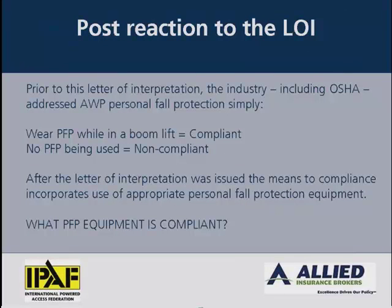As a byproduct of that letter of interpretation, prior to its issuance the industry addressed aerial work platform personal fall protection simply by saying: wear personal fall protection while in a boom lift and you're compliant. After this letter was issued, the means to compliance incorporates the use of appropriate personal fall protection equipment. This put the industry at a quandary — which personal fall protection equipment is compliant? Because a six-foot lanyard with an energy absorber was the most common personal fall protection used prior to the letter being issued.